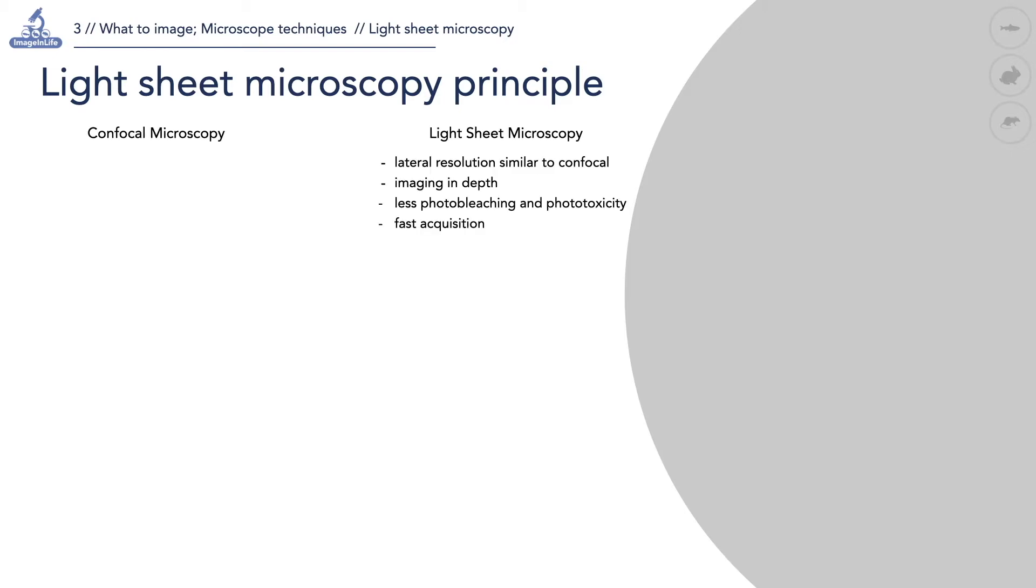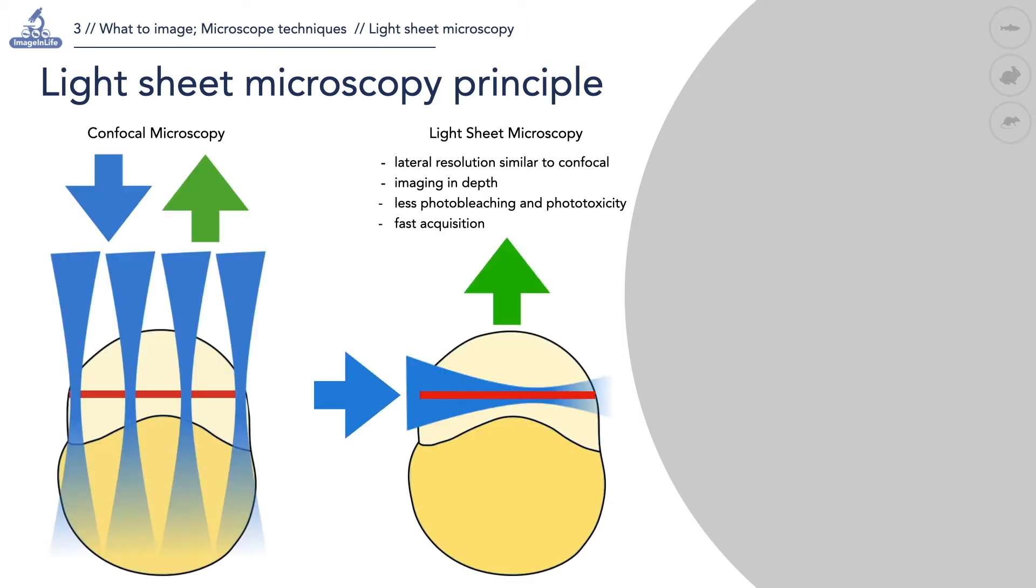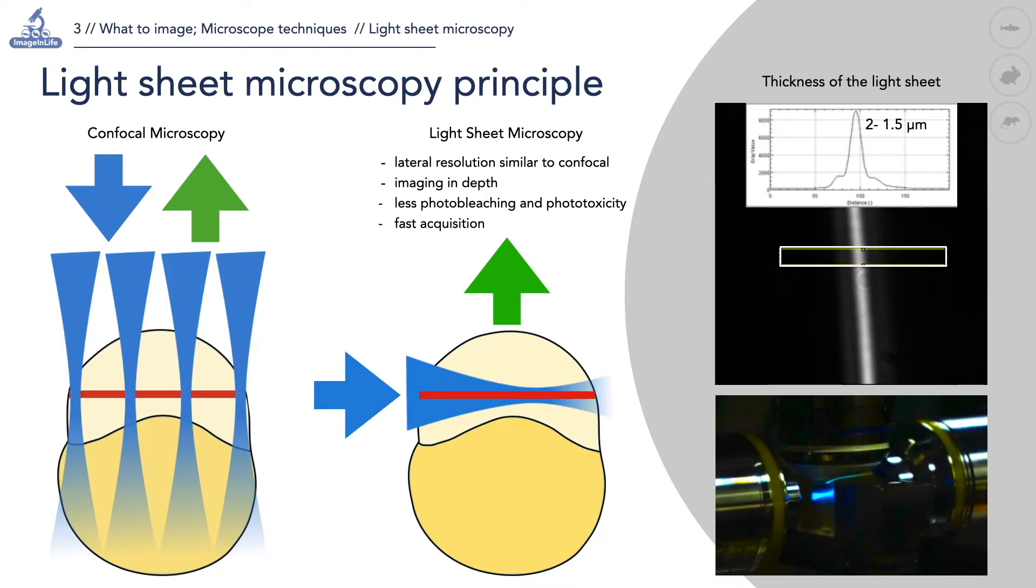Light sheet microscopy has a spatial resolution similar to confocal microscopy and also offers the possibility to image the sample in depth. With this technique the sample is illuminated in the region of the thin layer of light, in contrary to confocal microscopy where the excitation light travels through all the thickness of the sample. Light sheet microscopy leads to less photo damage for the sample than confocal microscopy. The thickness of the light sheet is about 1.5 micrometers. The light sheet can be adjusted depending on the requirements in terms of lateral and axial resolution.